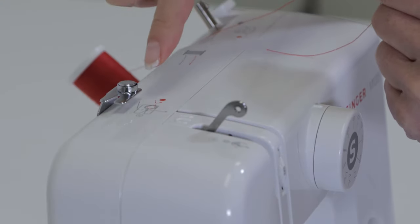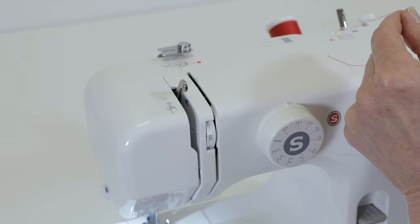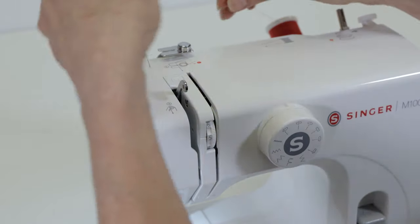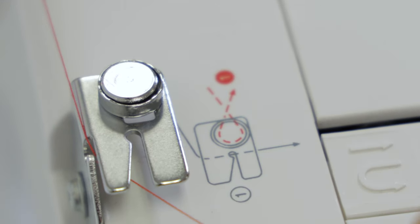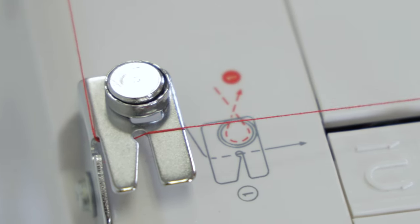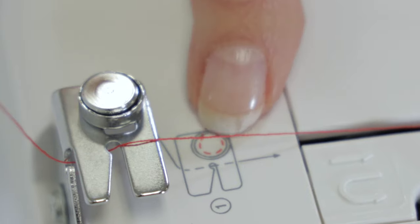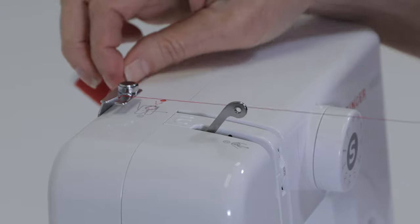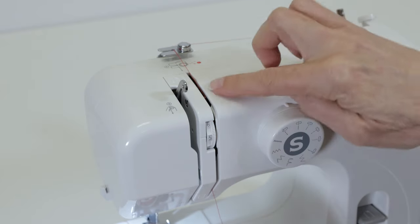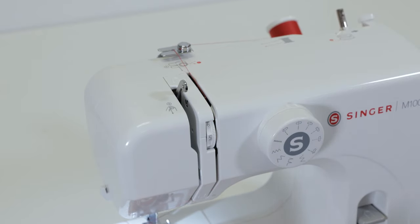And now we're going to follow the gray thread path indicated on the top of the machine by the thread guides. Lightly hold the thread with your right hand as you bring it into this guide, like so, just like the diagram on your machine. Continue holding the thread as you bring it down the channel, and then bring it down this right hand channel, around the U-turn.